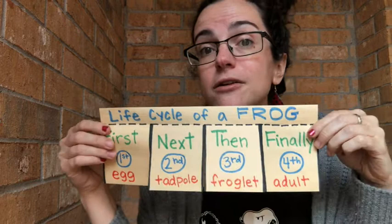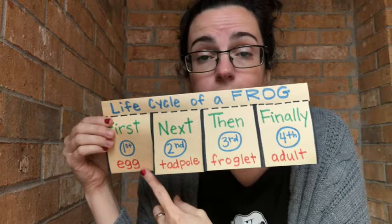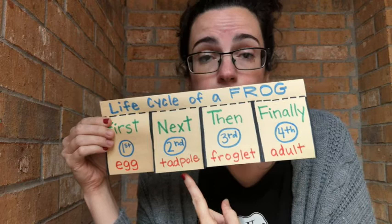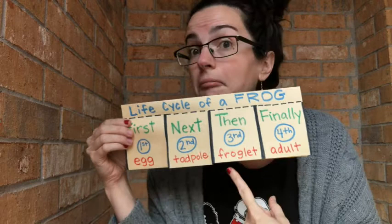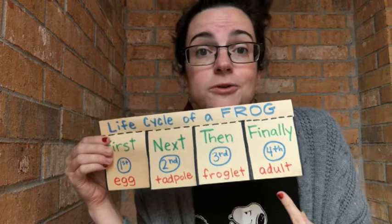Would you say a frog? Well, with the life cycle of a frog, there are going to be four main stages. The first stage is an egg. The second stage is a tadpole. Then the third stage is a froglet. And finally, the fourth stage is an adult frog.